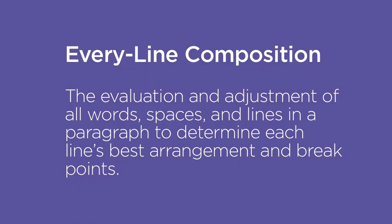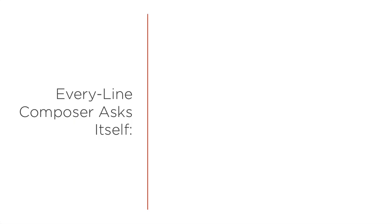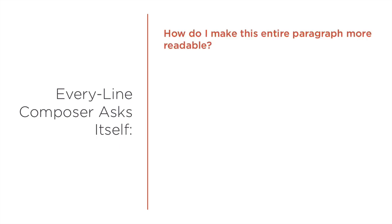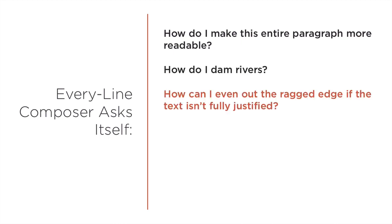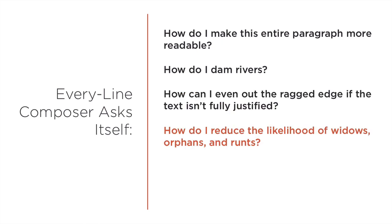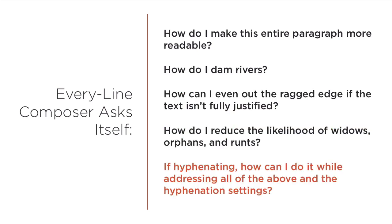Every Line Composer, however, evaluates its spacing and hyphenation choices based on every line, every word, every character, and every space in the entire paragraph. Every Line Composer looks at the paragraph and asks itself: How do I make this entire paragraph more readable? How do I dam rivers? How can I even out the ragged edge if the text isn't fully justified? How do I reduce the likelihood of widows and orphans? If I'm hyphenating, how do I do it so that all my other priorities are met without hyphenating lines too close to one another?